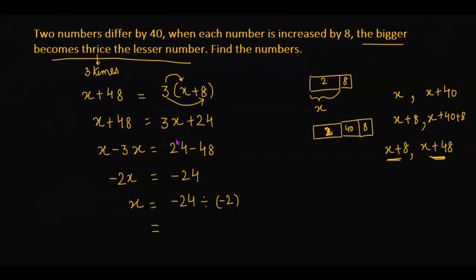The answer is x equals 12. So now the first number is 12 and the second number is 12 plus 40, which is 52.